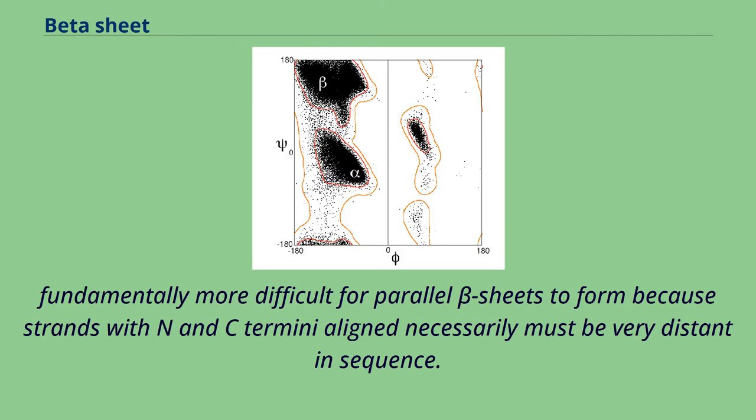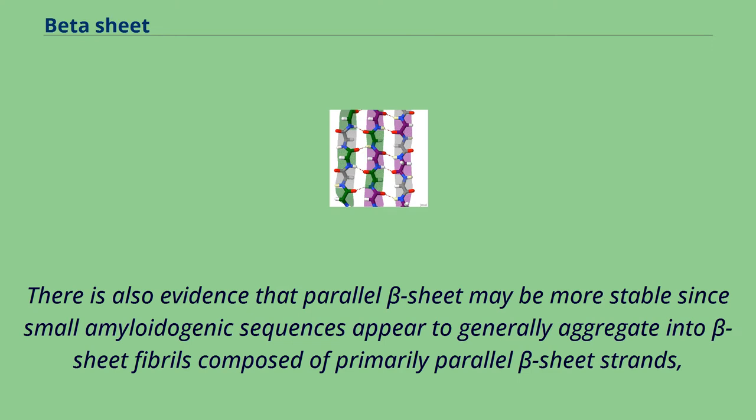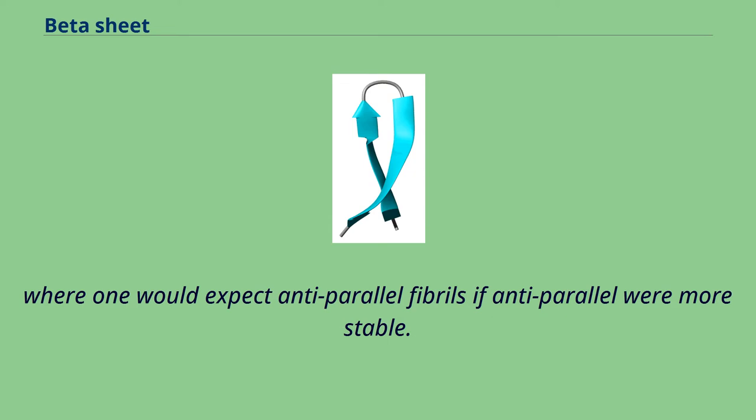However, it is also fundamentally more difficult for parallel beta sheets to form because strands with N and C-terminus aligned necessarily must be very distant in sequence. There is also evidence that parallel beta sheet may be more stable since small amyloidogenic sequences appear to generally aggregate into beta sheet fibrils composed of primarily parallel beta sheet strands, where one would expect anti-parallel fibrils if anti-parallel were more stable.